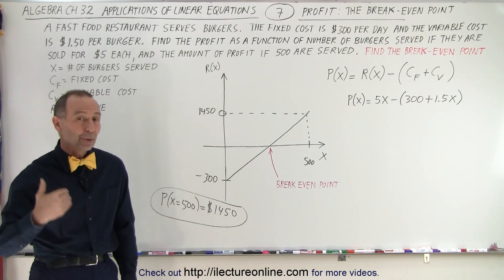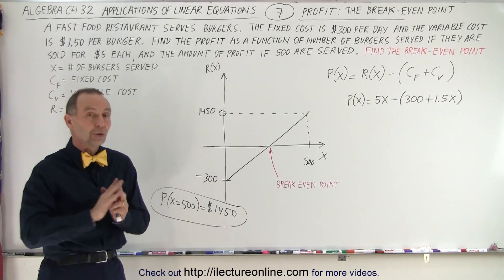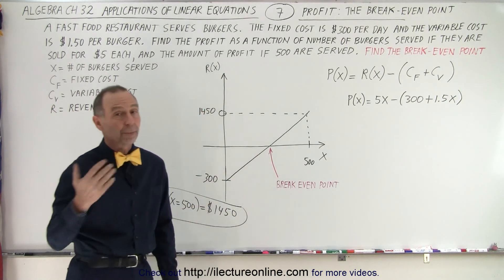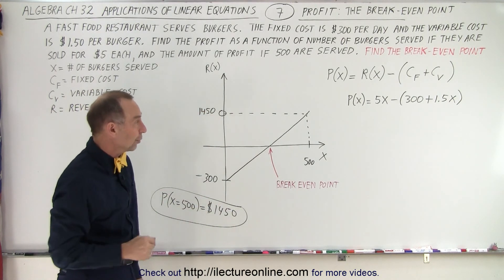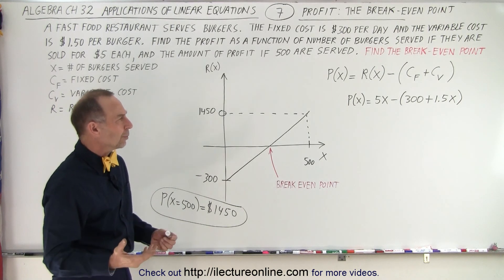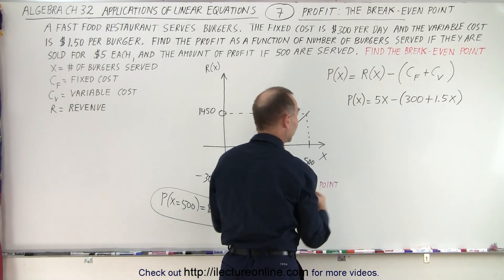So what's the minimum number of burgers I need to sell in order not to lose any money? That's called a break-even point, and so we're looking for the value x, the number of burgers that I need to sell in order so that the profit essentially is equal to zero. So how do we do that? Well, we do that by setting the profit equal to zero.